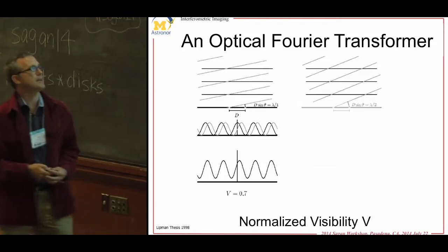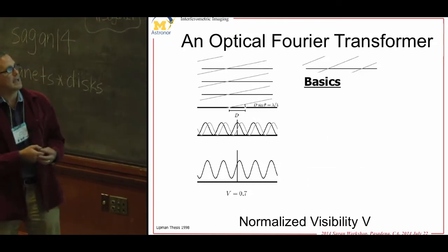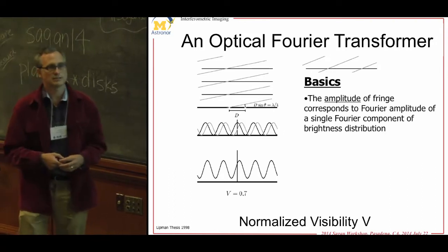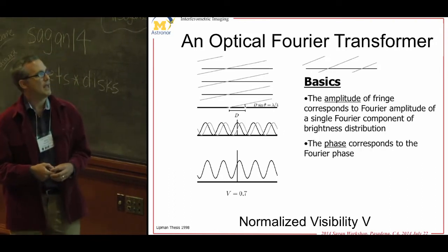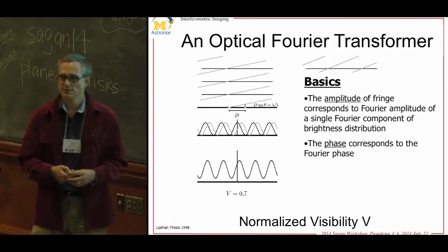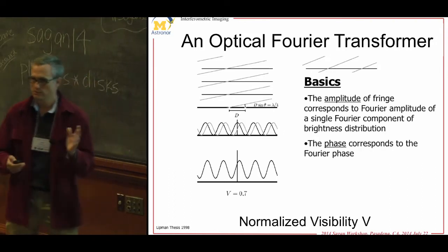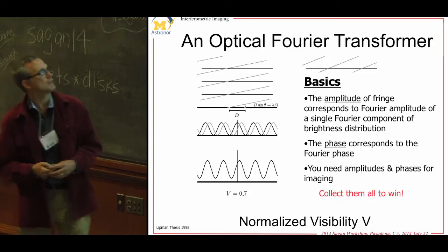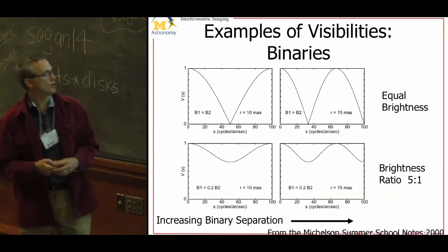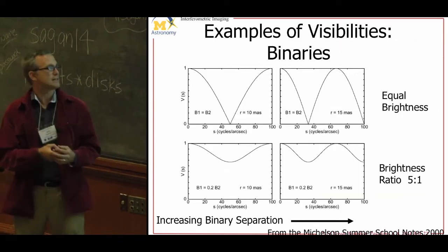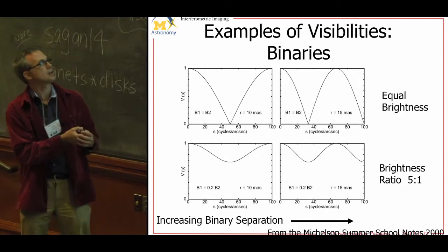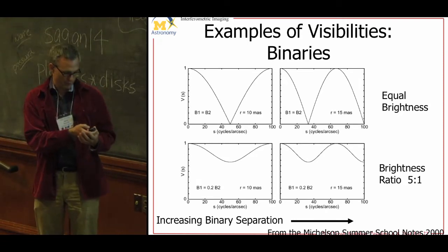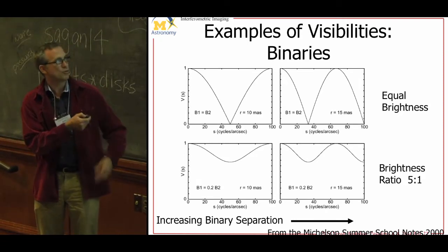The amplitude of the fringe is your Fourier amplitude of that single component and the phase is your Fourier phase. It's actually very simple.